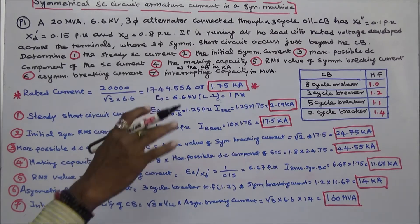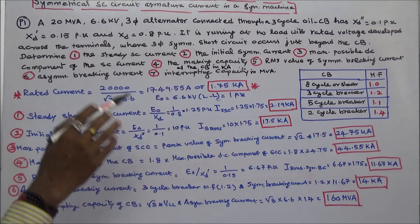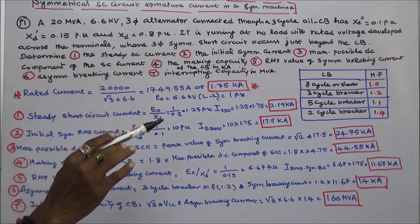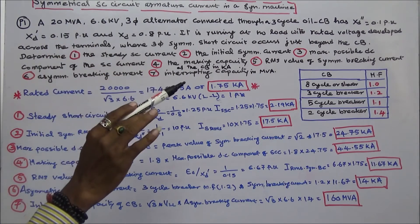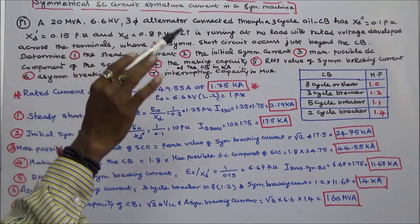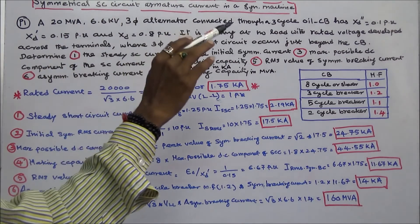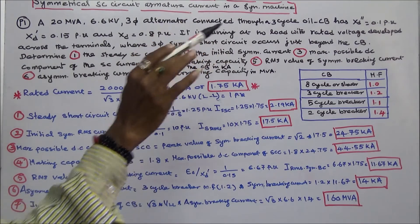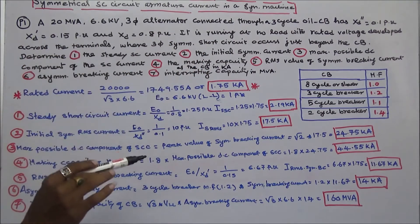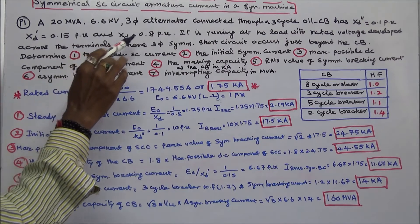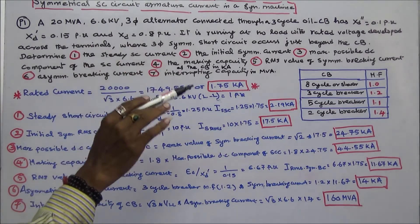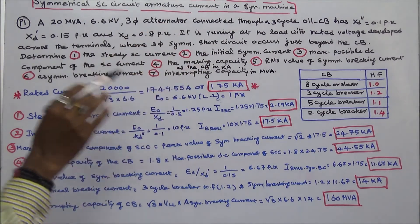This class we work out one problem: a 20 MVA, 6.6 KV, 3-phase alternator connected through a 3-cycle oil circuit breaker. It has subtransient reactance of 0.1 per unit, transient reactance of 0.15 per unit, and steady state reactance of 0.8 per unit. It is running at no load with rated voltage developed across the terminals.